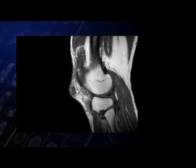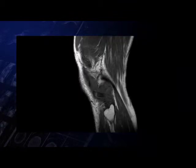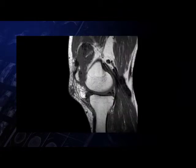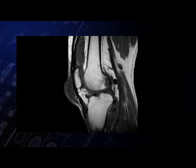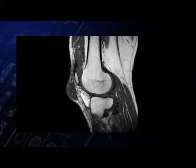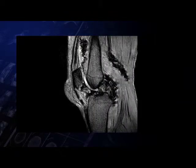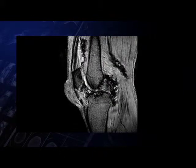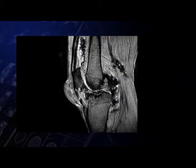Case 1: patient with a history of knee joint swelling. Images demonstrate diffuse synovial thickening with altered areas of signal intensity, predominantly hypointense on T1 and demonstrating areas of blooming on the gradient sequence.